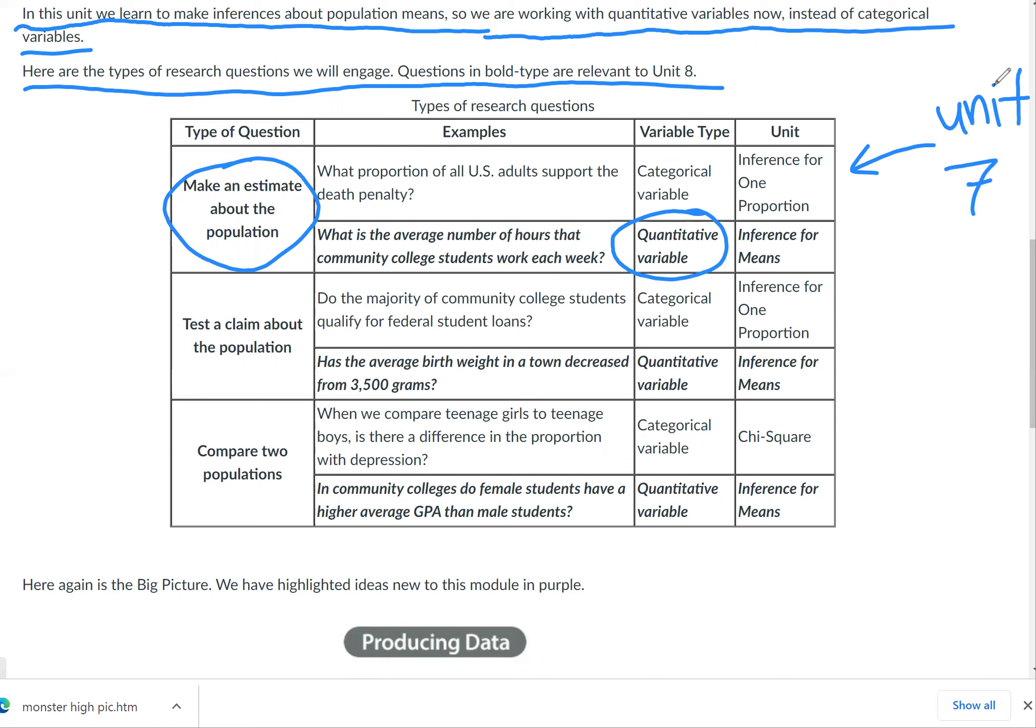In that case, we wouldn't talk about means very much because we would just talk about population proportions, which is the right thing to do when you're talking about a categorical variable. But now we'll see about quantitative variables. An example we might ask ourselves about making an estimate about the population would be something like: what is the average number of hours that community college students work each week? Because the answer would be a number, a quantitative variable.